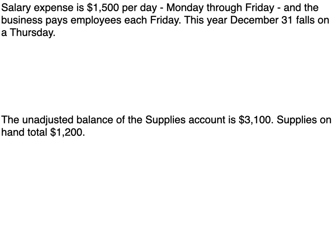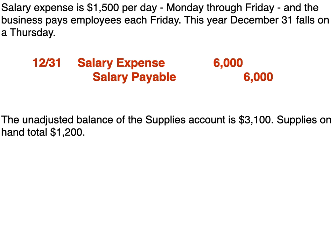Salaries expense is $1,500 per day Monday through Friday, and the business pays employees each Friday. This year December 31st falls on a Thursday. So we have incurred salary expense for four days — Monday through Thursday — and the employees have not been paid yet because they won't get paid until tomorrow. So on December 31st we debit salaries expense for $6,000 ($1,500 times four) and credit salaries payable for $6,000.